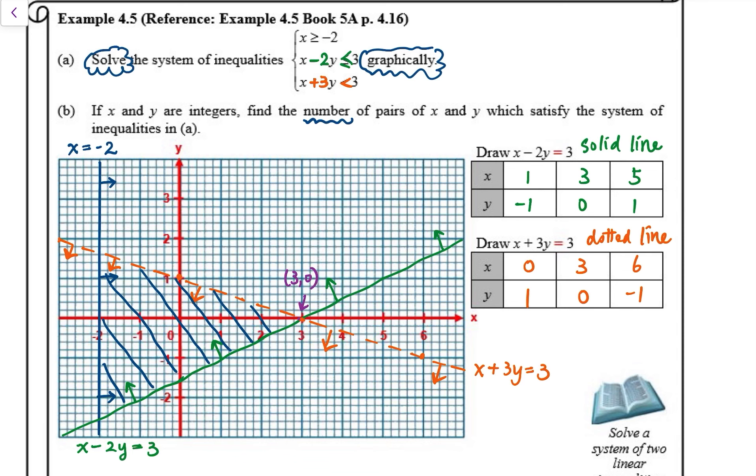3, 0 is not a solution because of the dotted line. So that's why 3, 0 is not a solution.